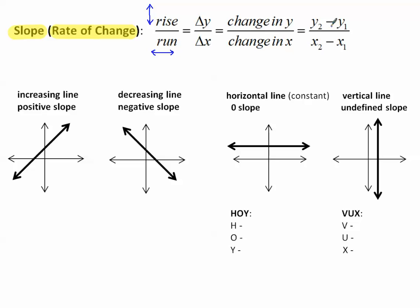When we find the change, we subtract the y coordinates over the change in x — we subtract the x coordinates. The formula is y sub 2 minus y sub 1, over x sub 2 minus x sub 1.